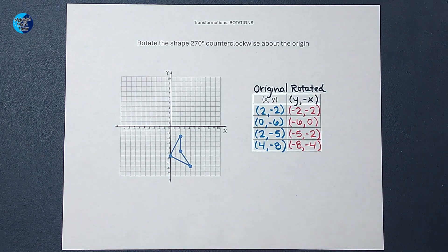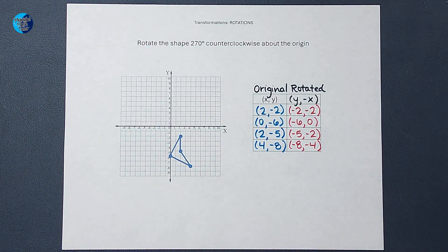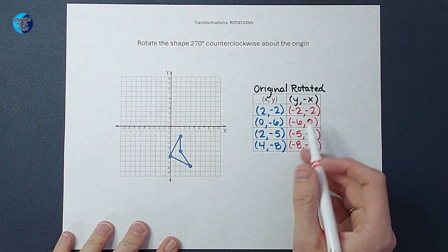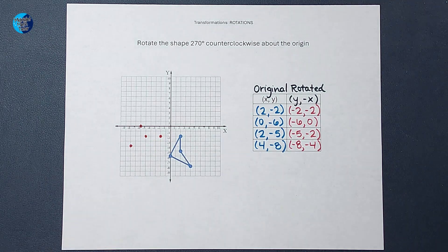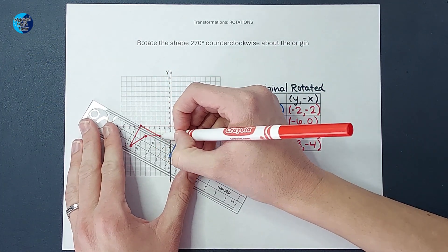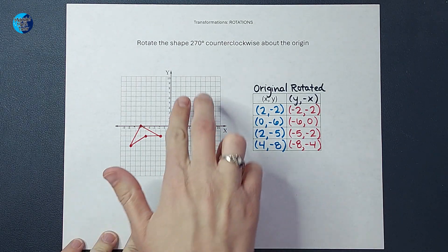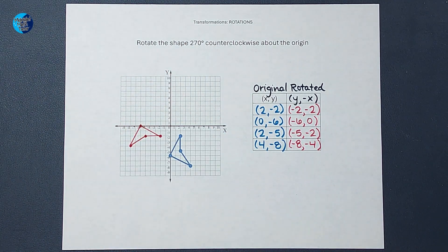These are the points. I believe if I plot these, I'm going to get this shape rotated 270 degrees. Let's go ahead and see by plotting these points. Okay, looking pretty good. Let's connect our dots. There we go, that is looking pretty good. Like I rotated that one, two, three quarters of a circle, which is 270 degrees.